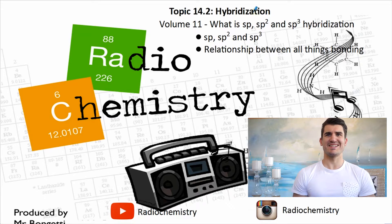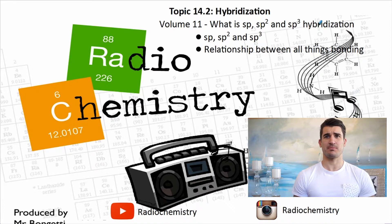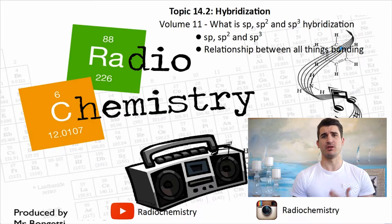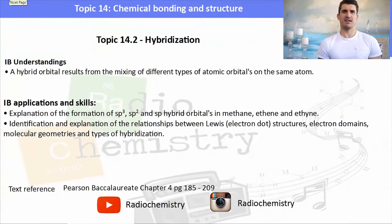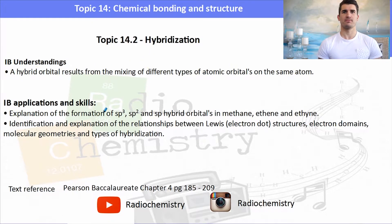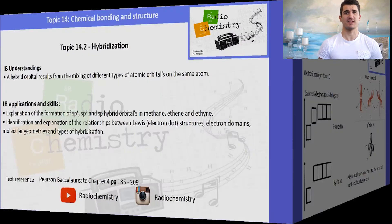We need to know what is SP, SP2, and SP3 hybridization — we need to be able to explain it and look at the relationship between all things bonding using some molecules. The IB understandings require us to understand what a hybrid orbital means, how it affects the orbitals, and explain the formation of SP, SP2, and SP3 hybridization in methane, ethene, and ethyne.